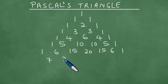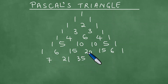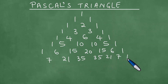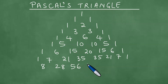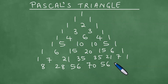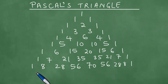Then 1 plus 6 is 7, 6 plus 15 is 21, 15 plus 20 is 35, 20 plus 15 is 35, 15 plus 6 is 21 — put 7s on the sides. Then 1 plus 7 is 8, then 28, then 56, then 70, then 56, then 28. With 21 plus 7 you have 8, then put 1 on each side. This can be extended even further.